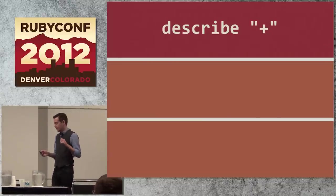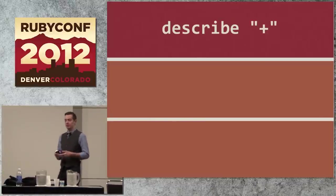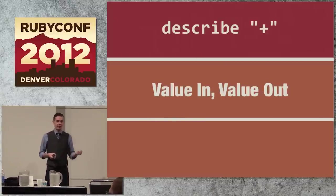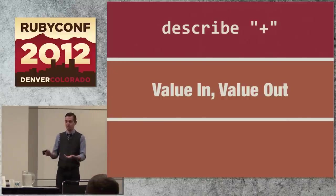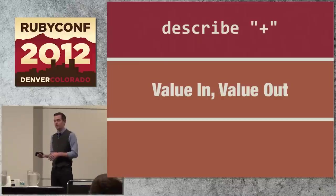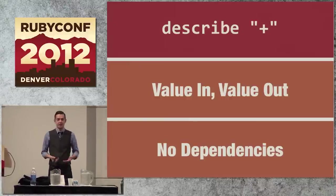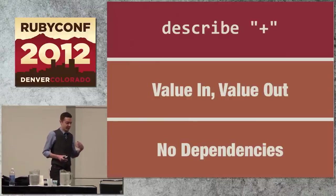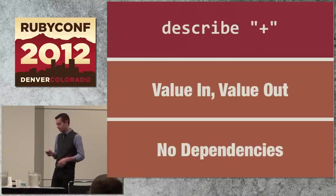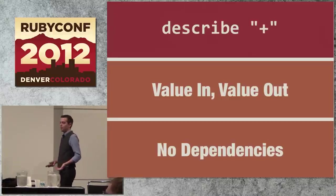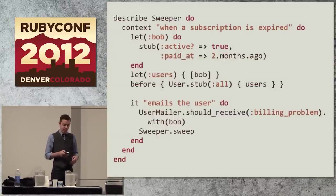It's tempting to say, plus is simple, so of course it isolates for free. That is not what's happening. It has two properties that are necessary to be naturally isolated with no stubs or mocks. The first is that it takes values as arguments and it returns new values. And it doesn't mutate those values. It just gives you a new value. It takes an integer and an integer, and it gives you an integer. The second property is that it doesn't have any dependencies. There's nothing to mock. It doesn't need anything else. It's a local computation that just produces a new value.